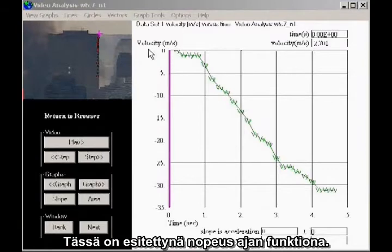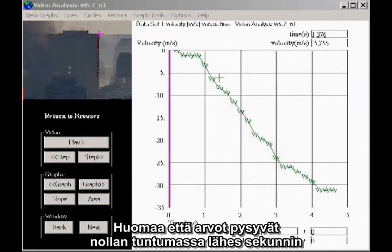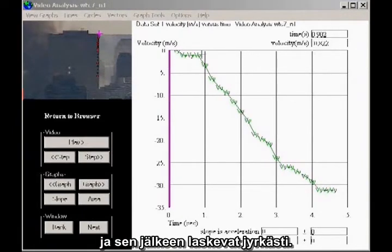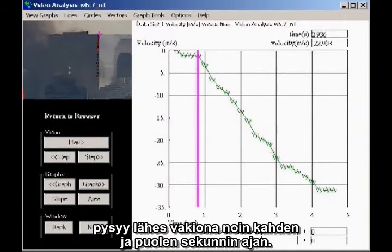I'm here plotting velocity as a function of time. The slope of this kind of graph gives the acceleration. Notice that the data hovers close to zero for nearly a second, and then it drops precipitously. From the moment of the drop, the slope of the line appears essentially constant for about two and a half seconds.